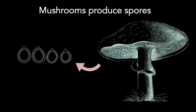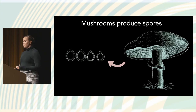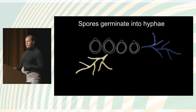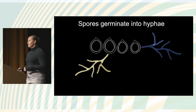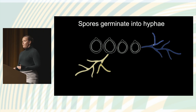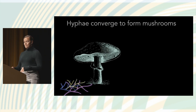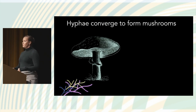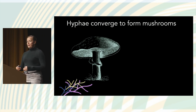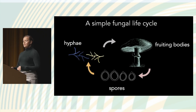From mushrooms come spores, which are microscopic — we need microscopes to see them; to our eyes they look like dust. Those spores go out into the world and germinate into hyphae or mycelia. You could think of this as the body of the mushroom. A mushroom is actually a reproductive structure, like the tree living underground. Spores come from mushrooms, germinate into hyphae, and then the hyphae converge back to form a mushroom in the right conditions.